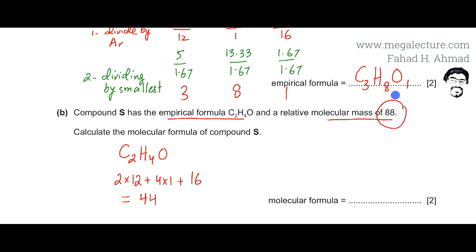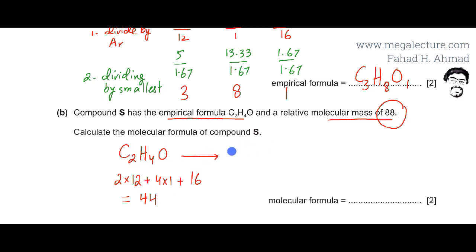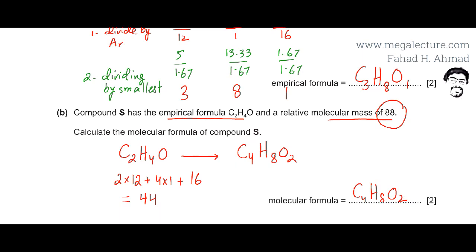The mass of the empirical formula is 44, and the mass of the molecular formula is 88. Since 88 is double 44, the molecule actually has twice the number of atoms. The actual molecule will have double the atoms in the same 2:4:1 ratio, giving 4 carbons, 8 hydrogens, and 2 oxygens. So the molecular formula is C4H8O2.